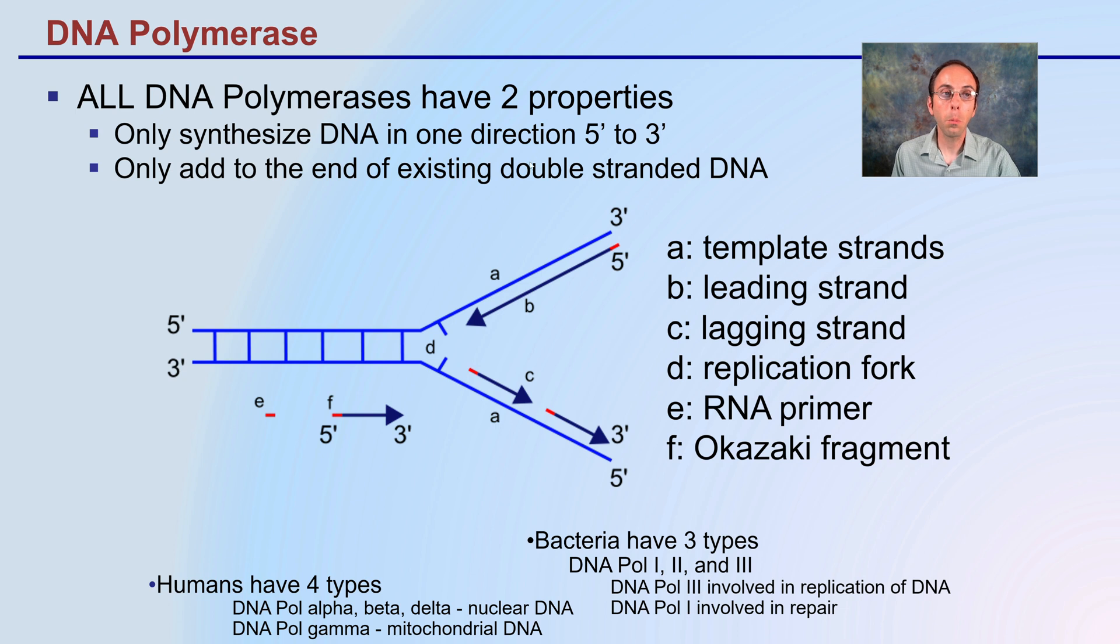That polymerase, all of them have two properties. They only synthesize DNA in one direction, the 5 to 3 prime direction. In the DNA vocabulary video I talked about that - it's looking at the number of carbon atoms. There's carbon atoms number 5 and number 3. You can only add to that number 3 carbon area. So it can only work in the 5 to 3 prime direction.